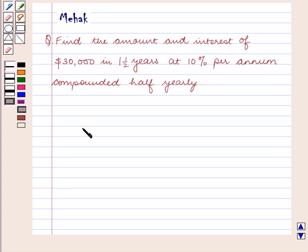The compound interest formula is: Amount A = P × (1 + R/100)^N.